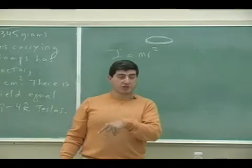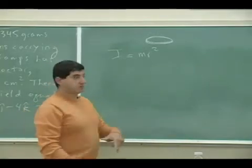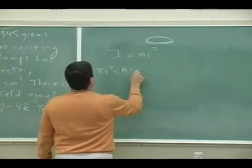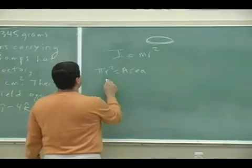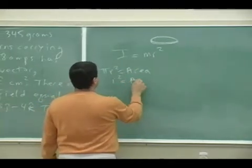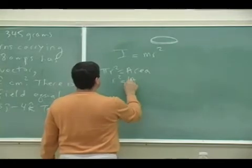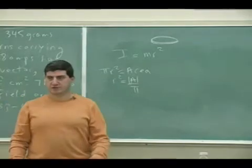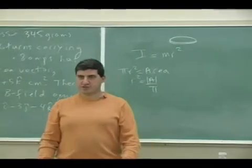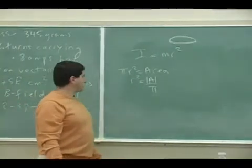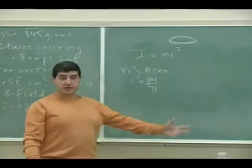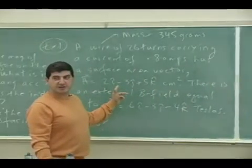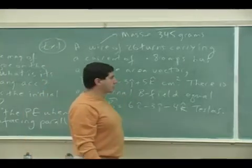I could say pi r squared is equal to the area, right? Therefore r squared is the area, the magnitude of the area divided by pi. So I don't really need to find the radius. I could just simply do the radius squared is area over pi and we already have the area vector.